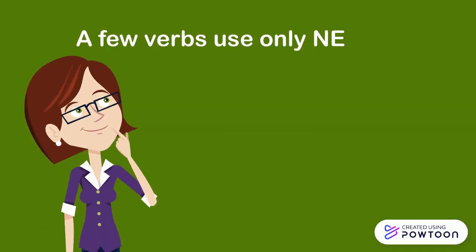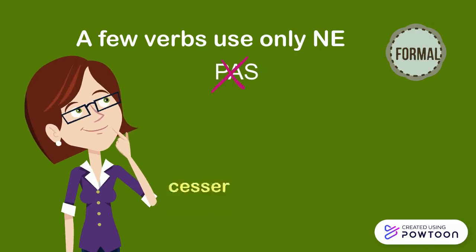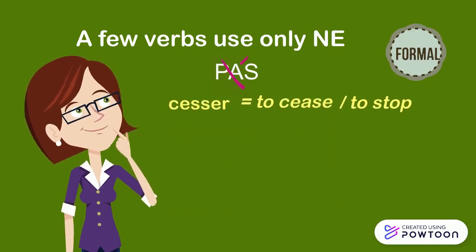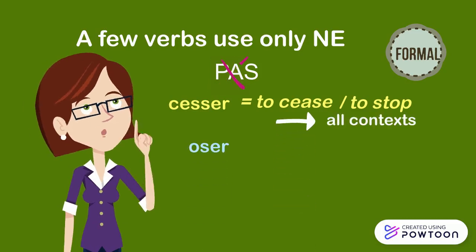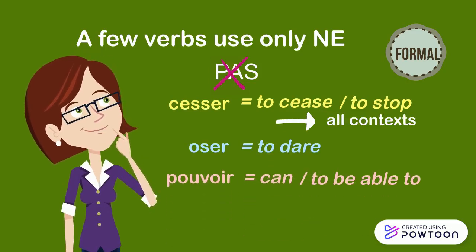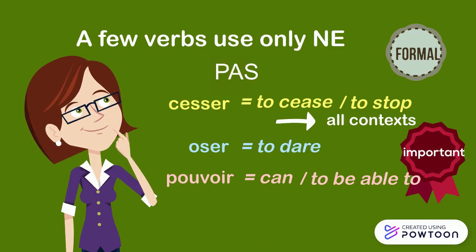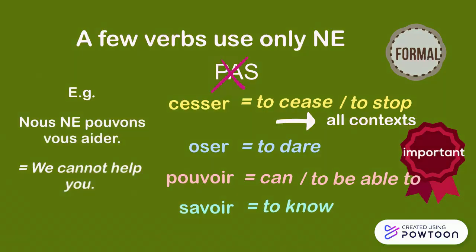A few verbs use only ne without pas to express a negative form, usually indicating a formal register: cesser (to cease / to stop — note that with cesser, you do not use pas in all contexts), oser (to dare), pouvoir (can / to be able to — the most important one), and savoir (to know). For instance, nous ne pouvons vous aider — we cannot help you.